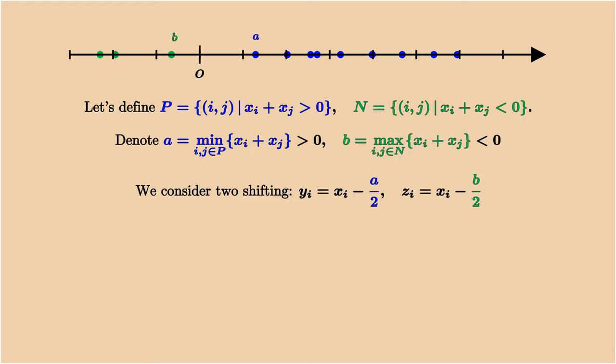Now we consider two shiftings: one to the left by a, the other to the right by b.